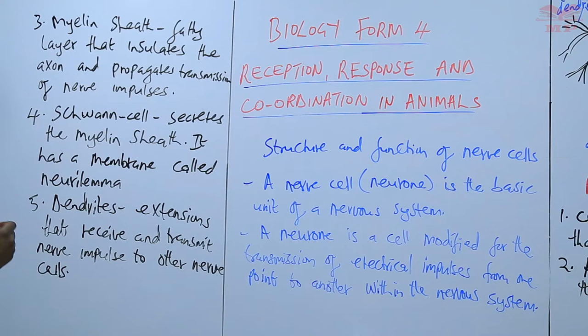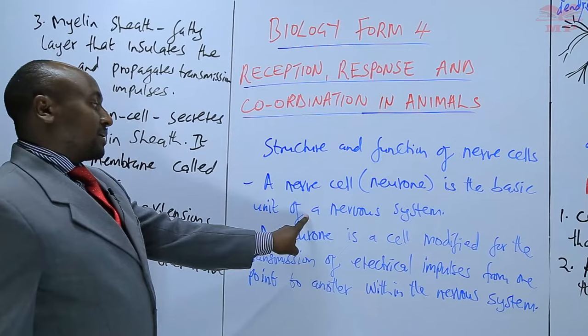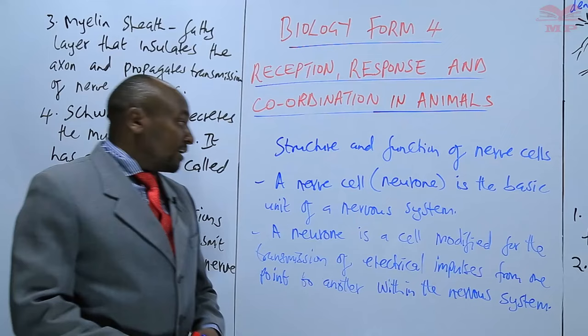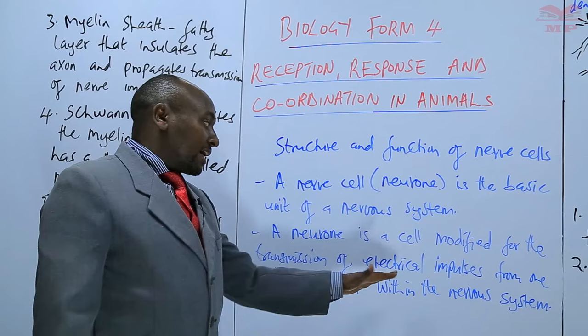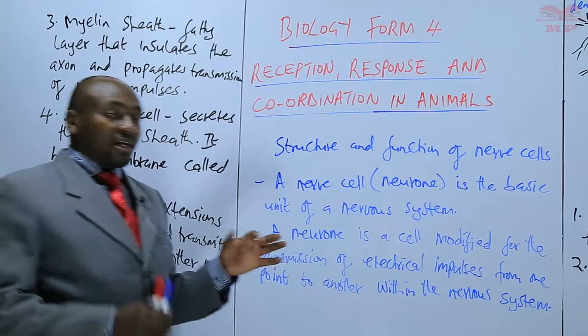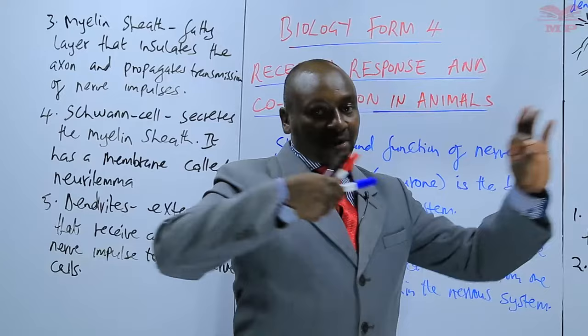Those are the main parts of a neuron. The neuron is the basic and smallest unit of a nervous system. A neuron is a cell modified for the transmission of electrical impulses. Nerve impulses are electrical in nature — they flow like electric current, the same way current flows through a wire.